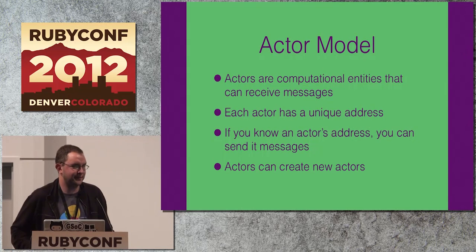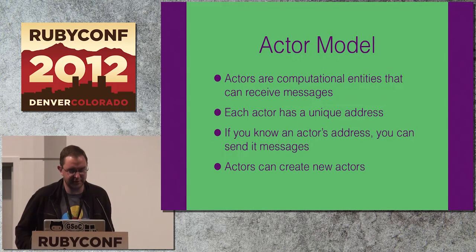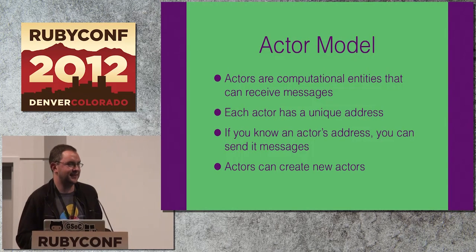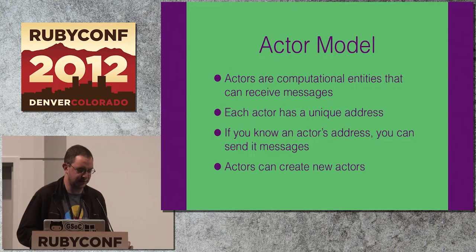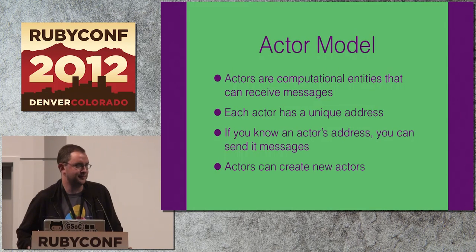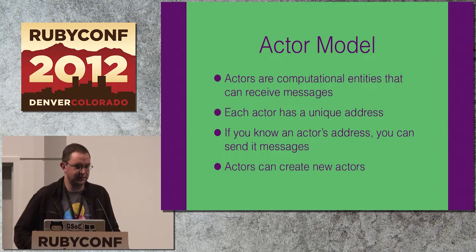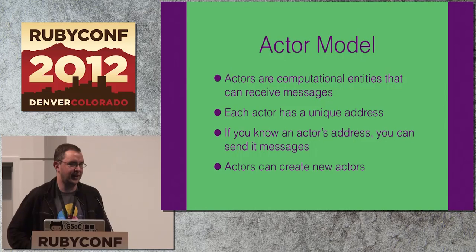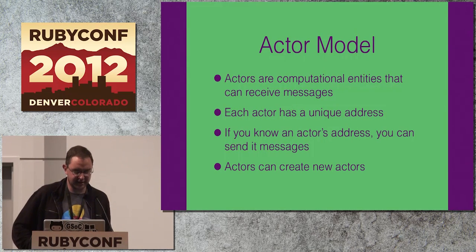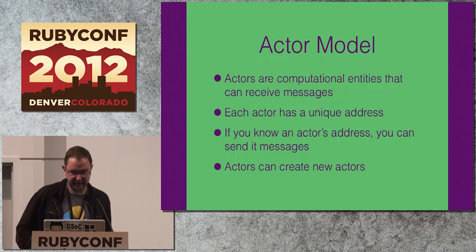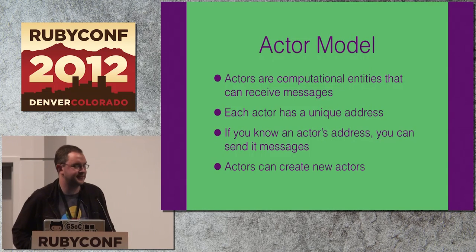The actor model may sound complicated, but I think it's actually pretty simple. You've got these things — they can be any type of computational primitive, easy to think of them as a thread. Each of them is an address, and if you have their address you can send a message, and actors can create other actors. That's really all there is to the actor model.